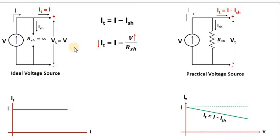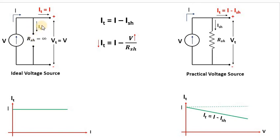Now let us see what happens in the case of a current source. The internal resistance of a current source is infinite, and it is connected in parallel with the source. For an ideal current source, the shunt resistance Rsh is infinity, so it acts as an open circuit. The current entering that branch, Ish, is zero, so It = I − Ish = I. In the ideal case the terminal current equals the source current.